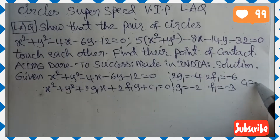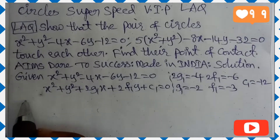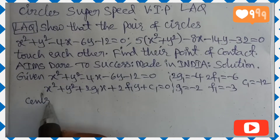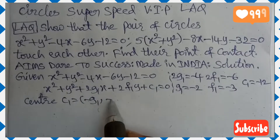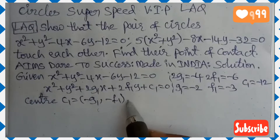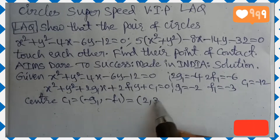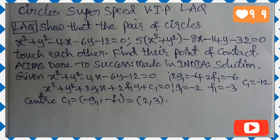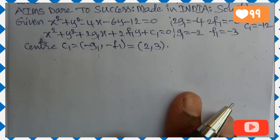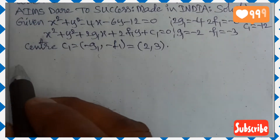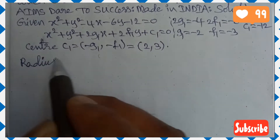Constant term c₁ = −12. Next we find the center. Center C₁ = (−g₁, −f₁). g₁ = −2, f₁ = −3, so center is (2, 3). Next we find the radius using the formula r = √(g₁² + f₁² − c₁).